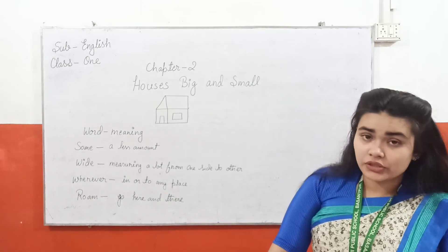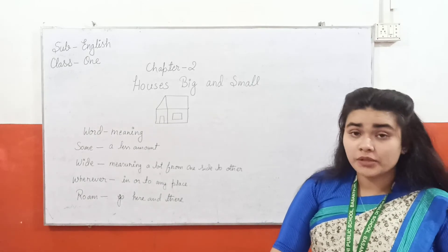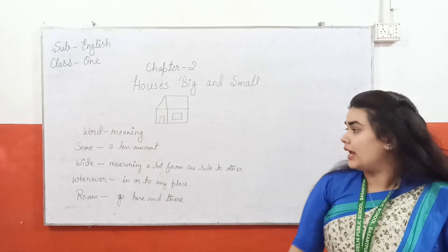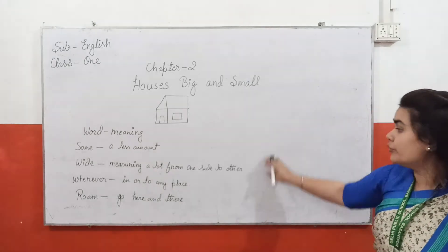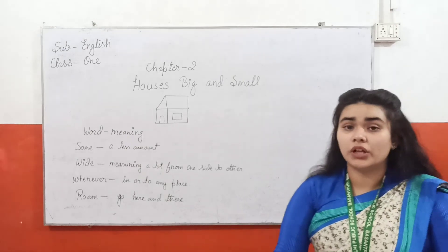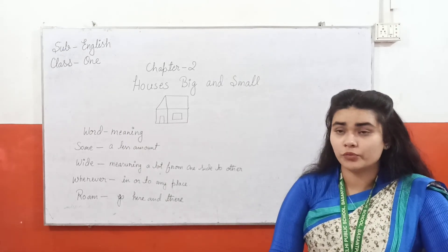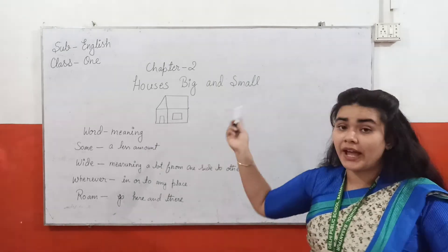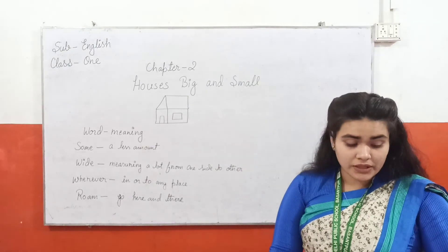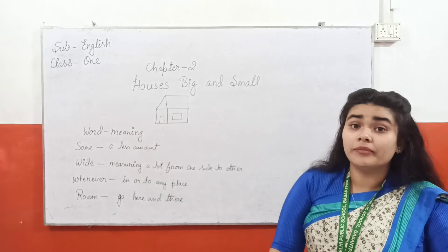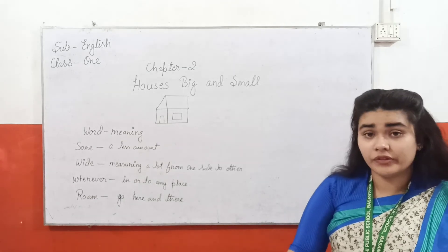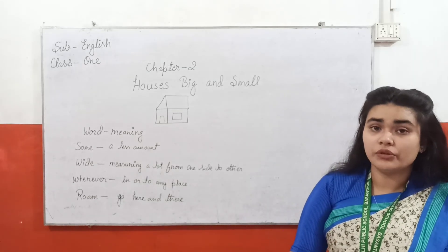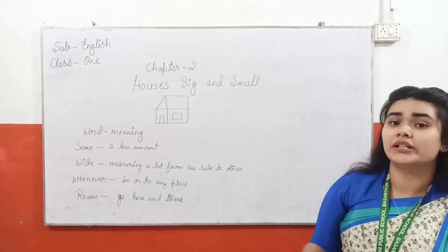So students, read the story, read the poem, learn the poem and make your video. And there are a few word meanings that you have to note down in your English copy. I hope you understand this poem. The name of the poem is Houses Big and Small. Read the poem, learn the poem, make a proper video, make a lovely video of yours. And once you complete the video, write your name in the comment section.